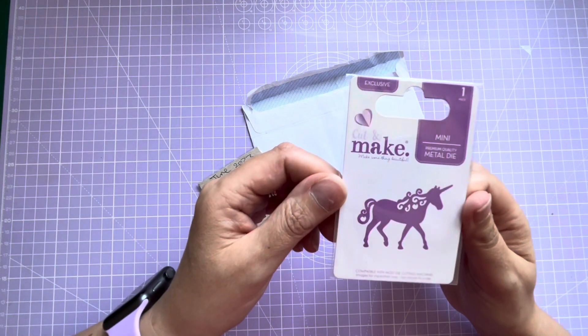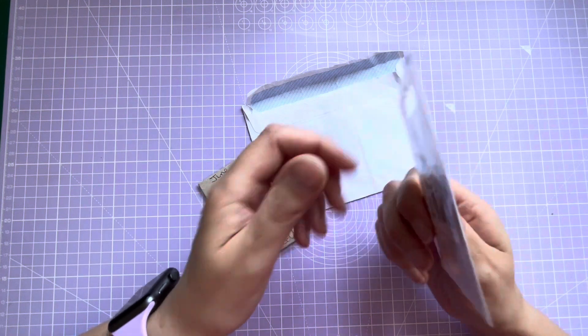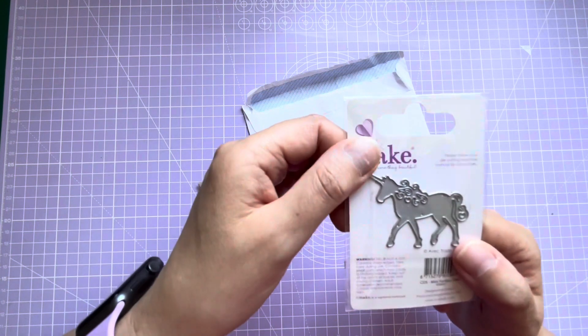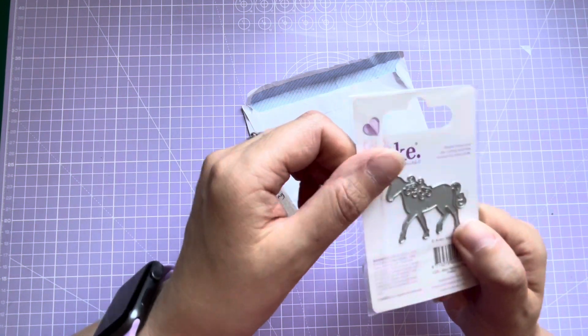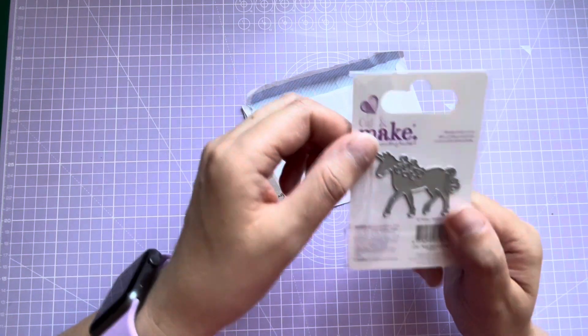Beautiful little unicorn! Love the little size, a perfect sort of ATC size. You could make a magical ATC. Beautiful, thank you Dee!